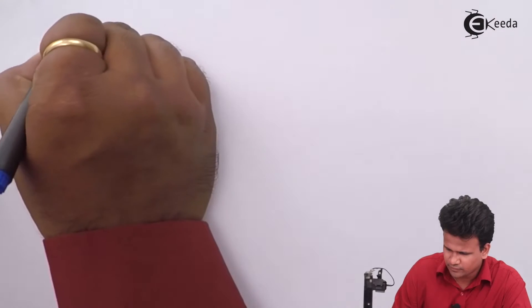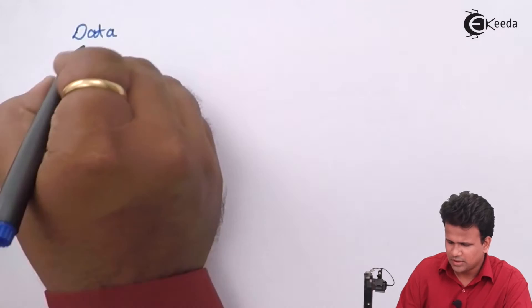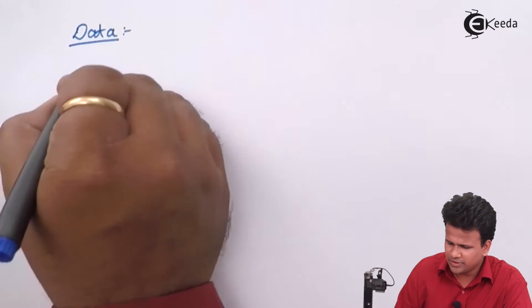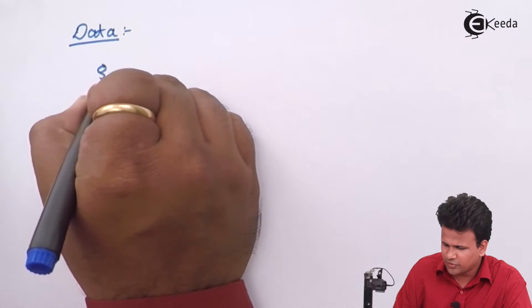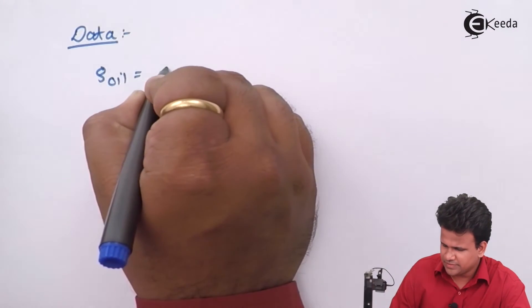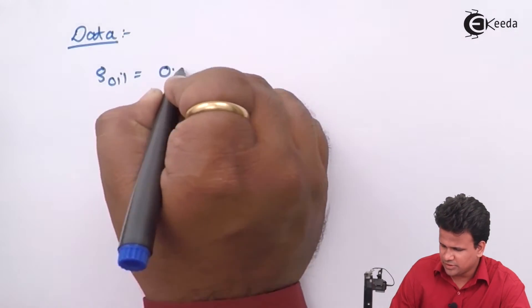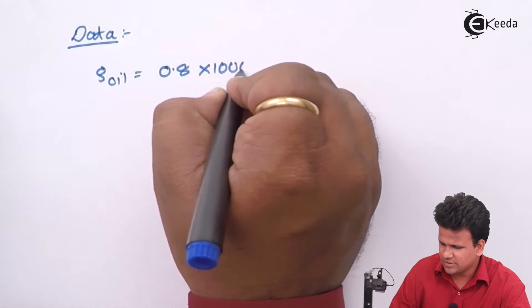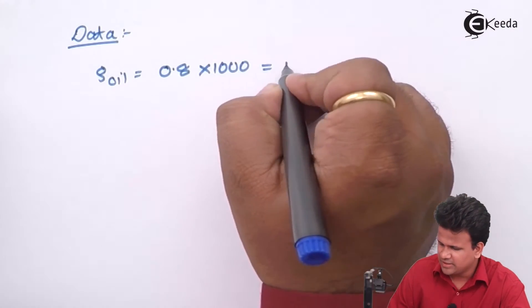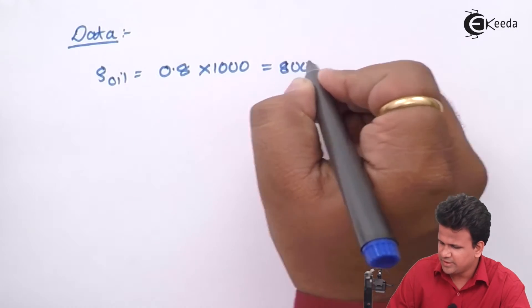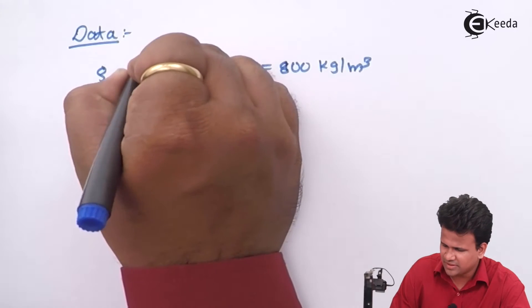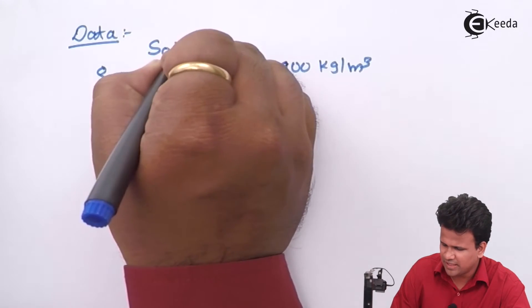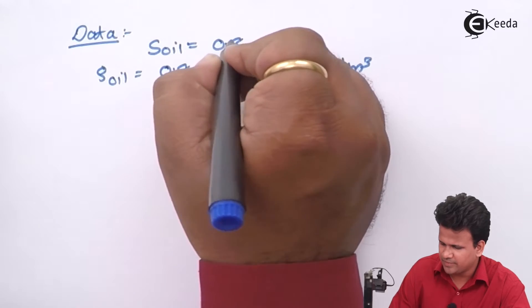Let us write down the data we know. The specific gravity of crude oil is 0.8, so the density of crude oil equals 0.8 × 1000 = 800 kg/m³.